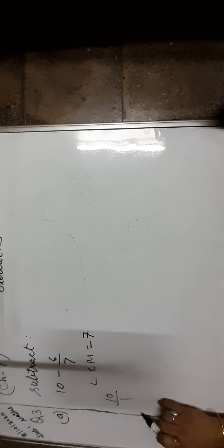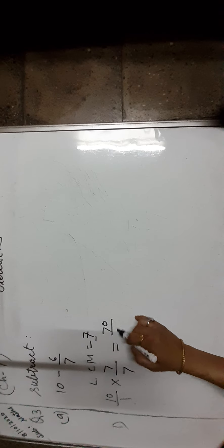Question number 3 is: subtract 10 minus 6 upon 7. We apply the same process for subtracting. First we find the LCM of the denominator, which is equal to 7. Take the first fraction that is 10 upon 1. How much do we multiply? In 1 to get 7 — it is 7 times. So both numerator and denominator are multiplied by 7, which is equal to 70 upon 7.